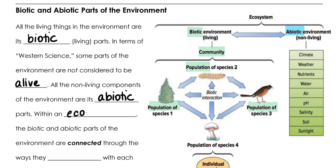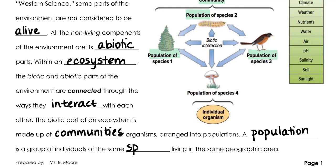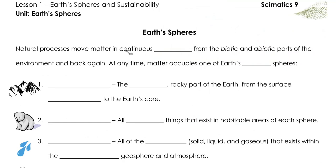Within an ecosystem, the biotic and abiotic parts of the environment are connected through the ways in which they interact with each other. The biotic part of an ecosystem is made up of communities of organisms arranged into populations, and we define a population as a group of individuals of the same species living in the same geographic area. At any time in this process, you can clearly identify the location of matter as belonging to one or more of Earth's four spheres.